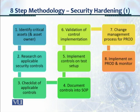Step five: implement the controls on the test setup. Step six: validation and checking of the control implementation. Step seven: change management process for the production environment. Step eight: implement on the production environment and monitor.